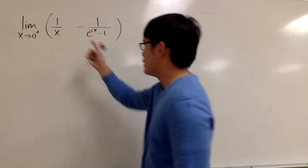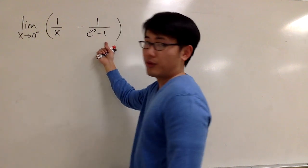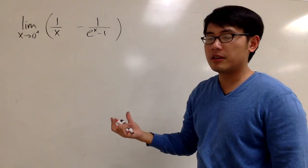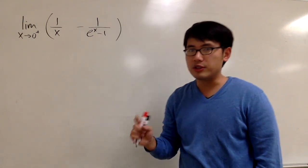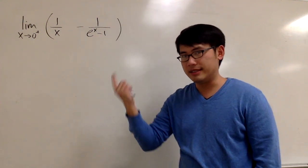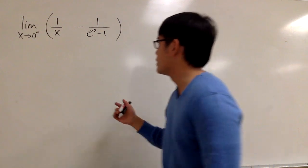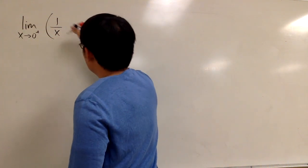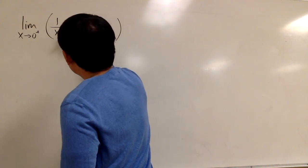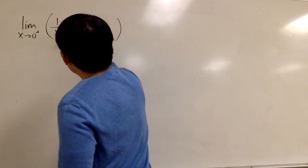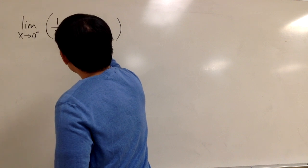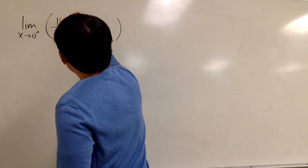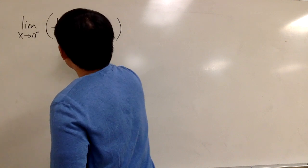As usual, because we are subtracting two fractions, let's get the common denominators and put them into just one fraction. To get the common denominator, I will have to multiply by e to the x minus 1 on the bottom, and also do the same on the top: e to the x minus 1.